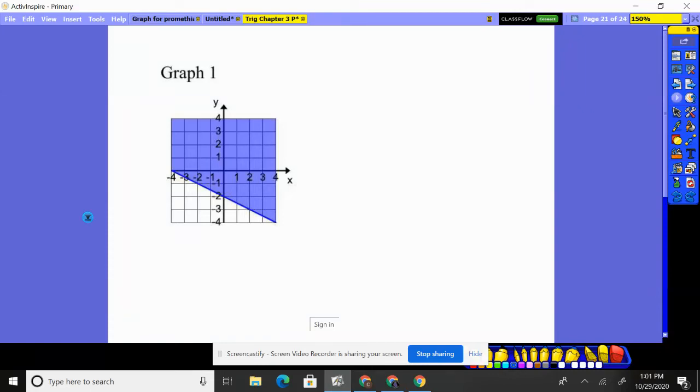All right, looking at this inequality. We notice that the line has been shaded above it, so we know it's going to be y is greater. It's a solid line, all these points are solutions, so it's going to be or equal to. The points on the line are solutions, so it's or equal to there.